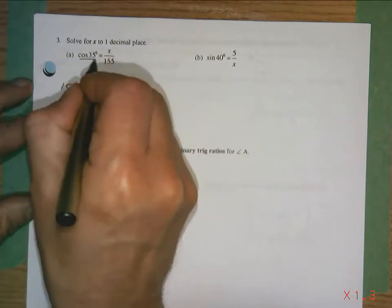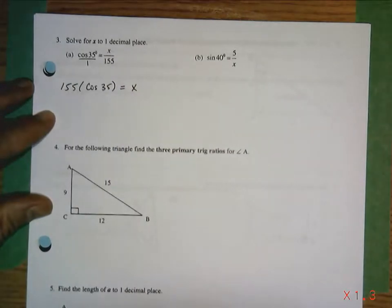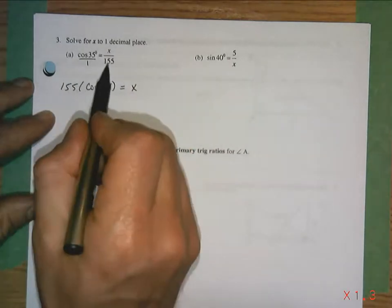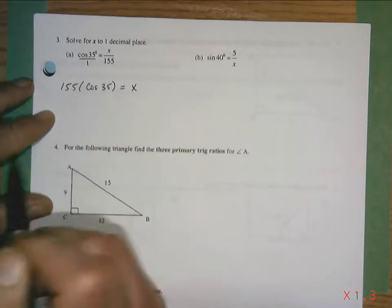So remember what I did here? I just considered that over top of 1 and I multiplied both sides by 155, reducing that one.